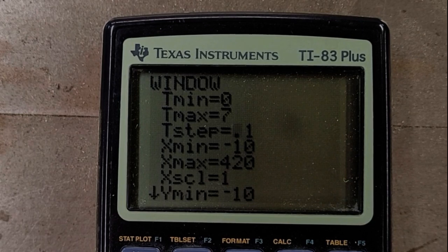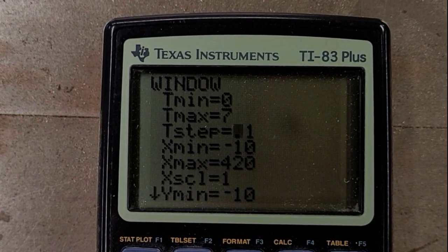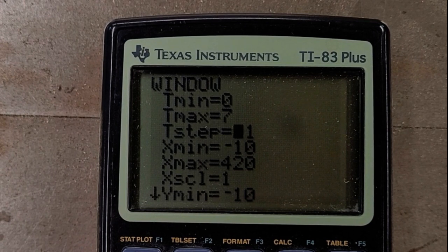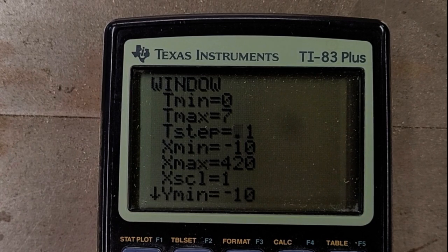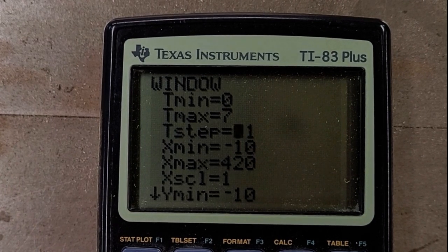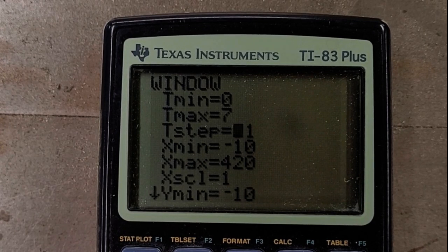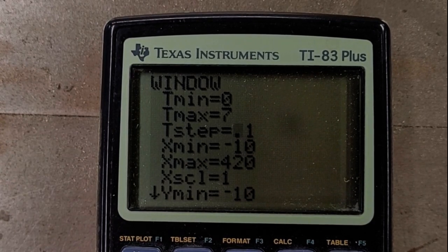Imagine you're doing this problem by hand and you were making a table of values. This would be like the increment for your t values. So what's happening here is the calculator is going to produce a point. In other words, it's going to connect the dots every tenth of a second. Well, that's not bad. I mean, that'll be fine. I'll share with you, you don't want your t-step to be too big.